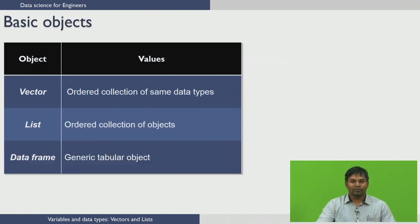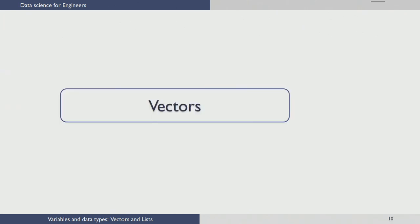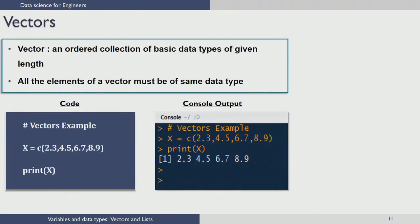R has several basic objects, the most important being vectors, lists, and data frames. A vector is an ordered collection of elements of the same data type. A list is an ordered collection of objects themselves. A data frame is a generic tabular object and the most widely used object in R. A vector is an ordered collection of basic data types of a given length, and all elements must be of the same data type.